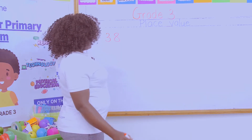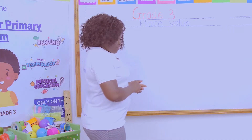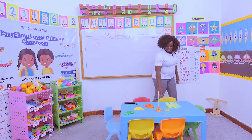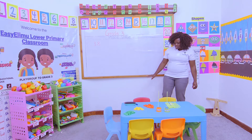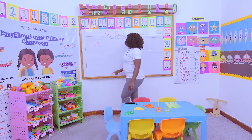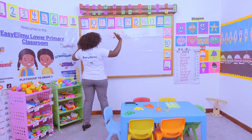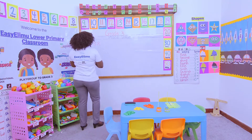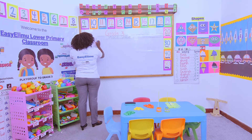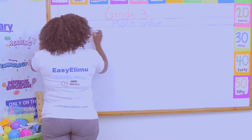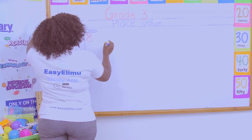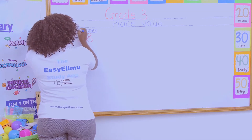In grade 1 we did place value using the bundles of sticks. So I've been told to identify the place value. Rule number 1: all the numbers on the right hand are in the ones place value. All the numbers on the left hand are in the tens place value.